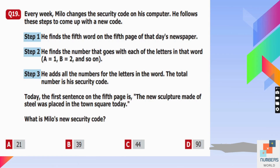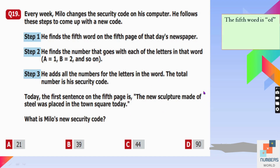Question number nineteen: Every week Milo changes his security code following three steps: find the fifth word on the fifth page of that day's newspaper; assign each letter a number (A=1, B=2, C=3, and so on); add all the numbers for the letters in the word. The fifth word of the fifth page is 'off.' O is at position 15 and F is at position 6. Adding 15 plus 6 equals 21, so his security code is 21.